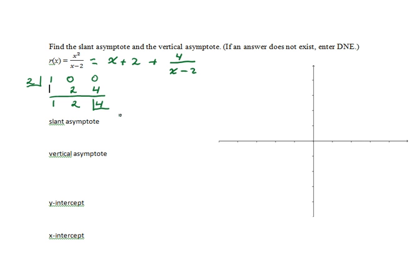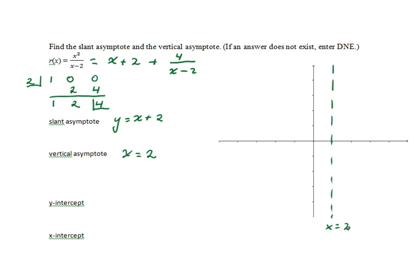The slant asymptote is the function defined by the quotient, so y equals x plus 2. The vertical asymptote is determined by the zero of the denominator, which is 2, so x equals 2 is the vertical asymptote. I'm going to use a scale of 2 units for each tick mark, and sketch in x equals 2 and y equals x plus 2.